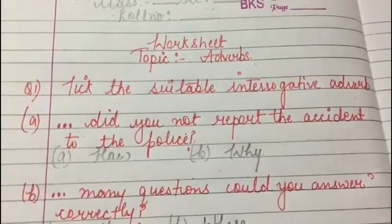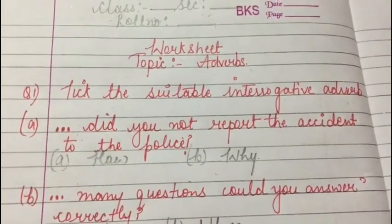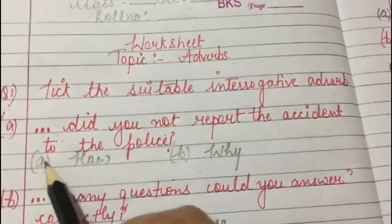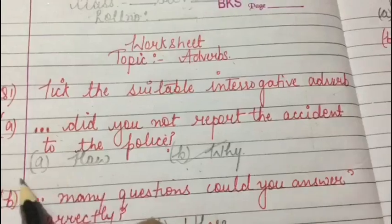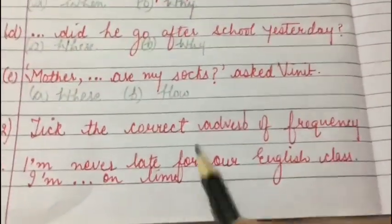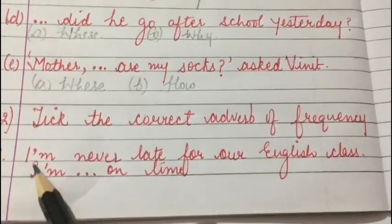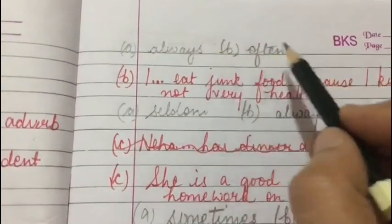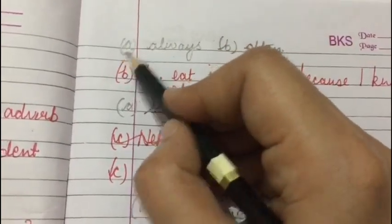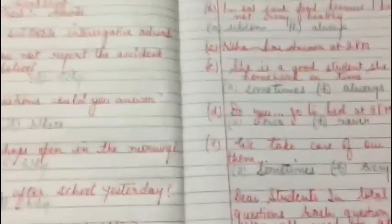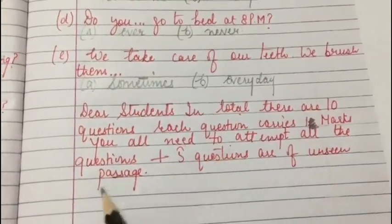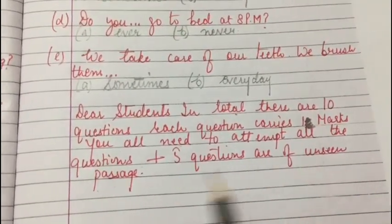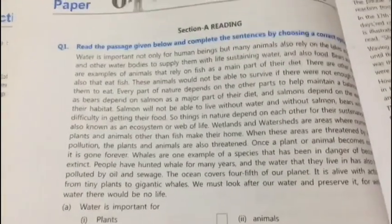You don't have to write the answer in the blanks — you just have to pick the right option, as this matches the format of your periodic test. The first question is: '__ did you not report the incident to the police?' — and the correct answer is 'Why did you not report the incident to the police?' The second question asks for the correct adverb of frequency: 'I am never late for English class, I am __ on time' — the correct answer is 'I am always on time.' There are 10 MCQ questions in total, each carrying one mark, and you must attempt all of them.